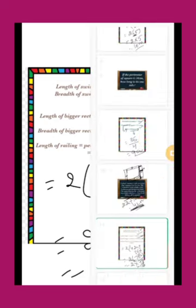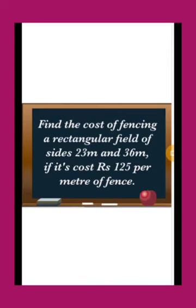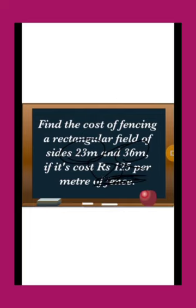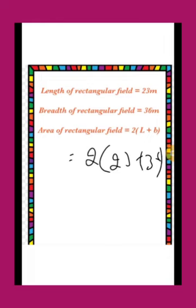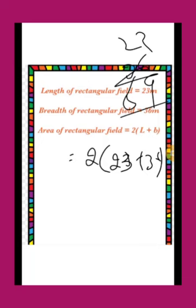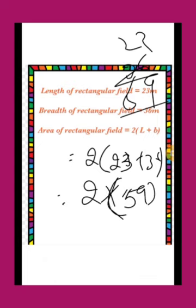Next: find the cost of fencing a rectangular field of size 23 meter and 36 meter, if it costs rupees 125 per meter. First we find the perimeter: 2 into (23 + 36). We solve the bracket: 23 + 36 = 59, so 2 into 59.